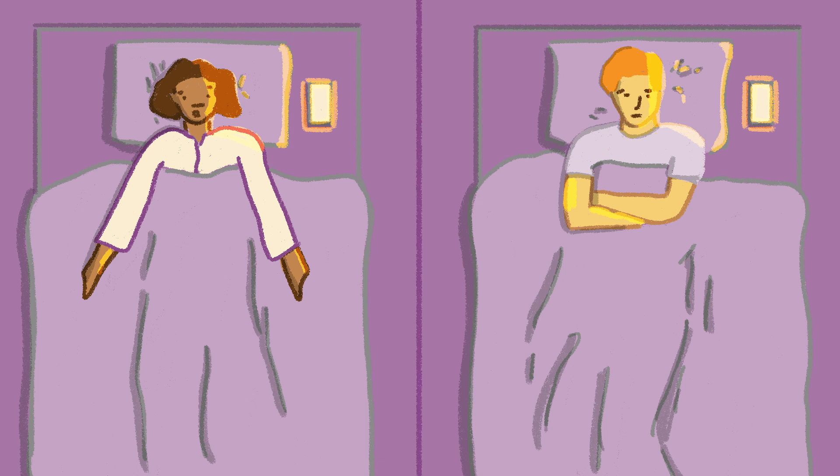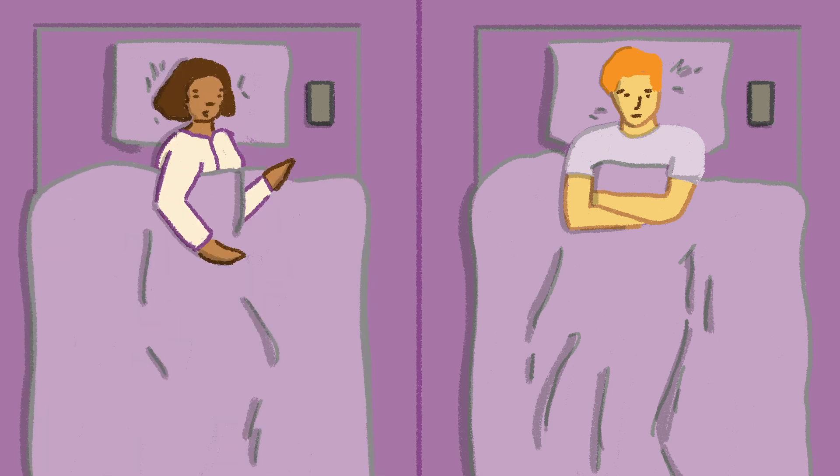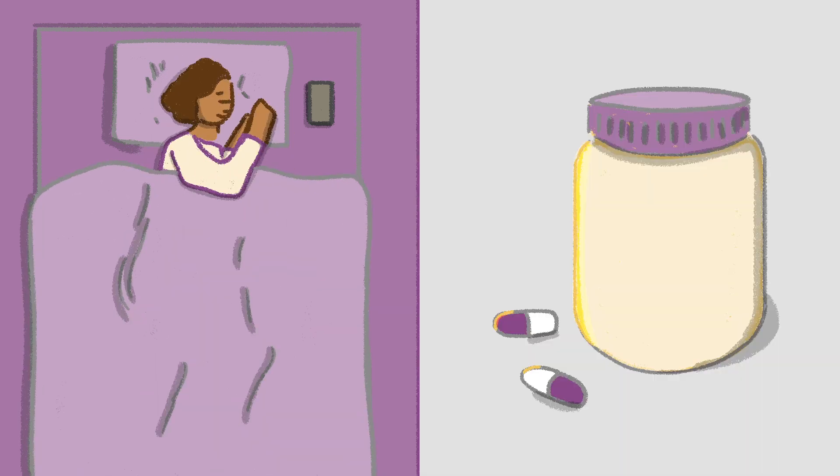For example, some autistic individuals have sleep difficulties. For some, changing the environment can help but for others, knowing the genetics could lead to individualised care.